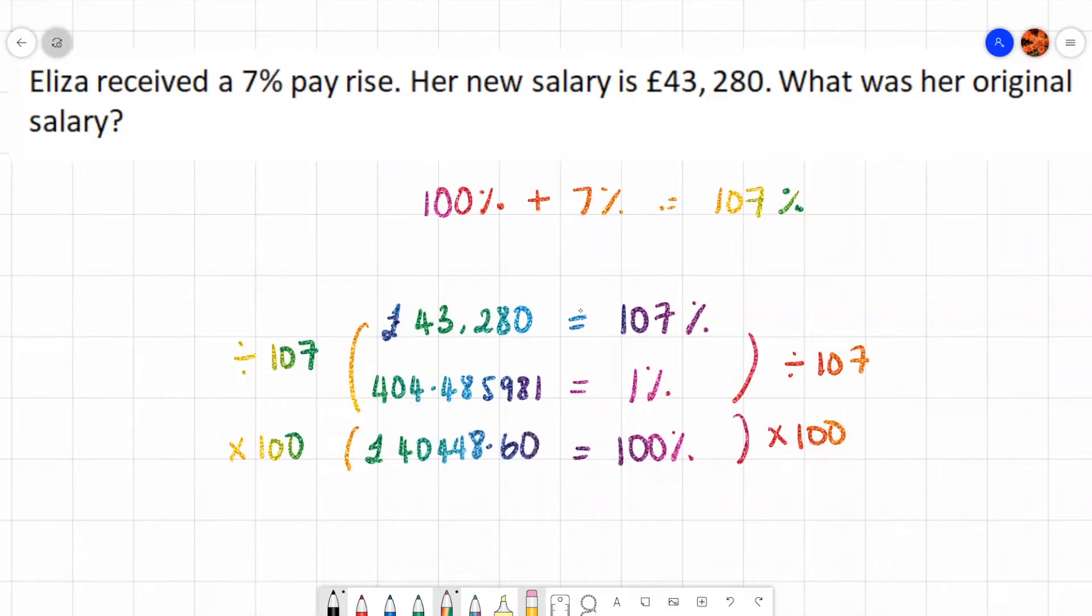Okay. I'm going to round that up. So her salary before her pay rise was 40,448 pounds and 60p. And after her pay rise, she gets 43,280 pounds.